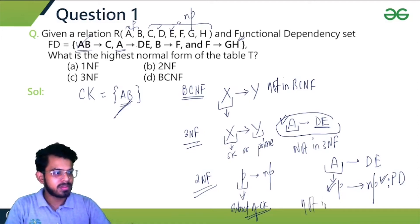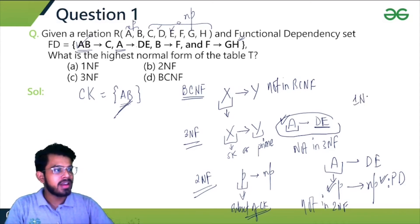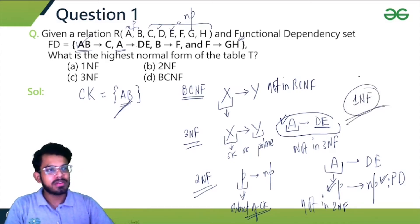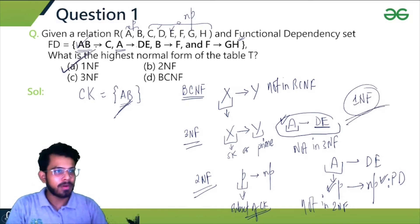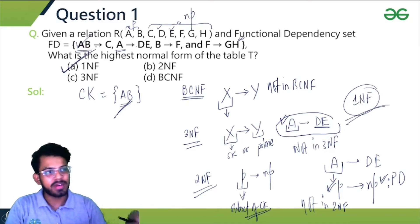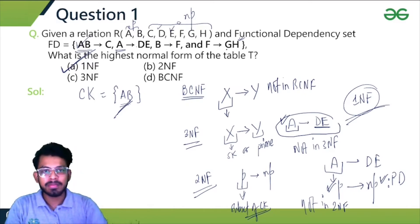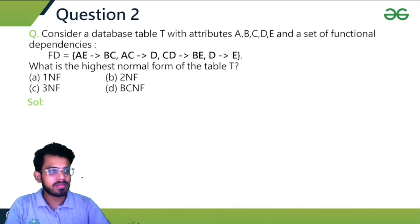Since partial dependency exists, the relation is not in 2NF. However, it is obviously in 1NF, because every relation in RDBMS is in 1NF. So the highest normal form of this relation is 1NF.